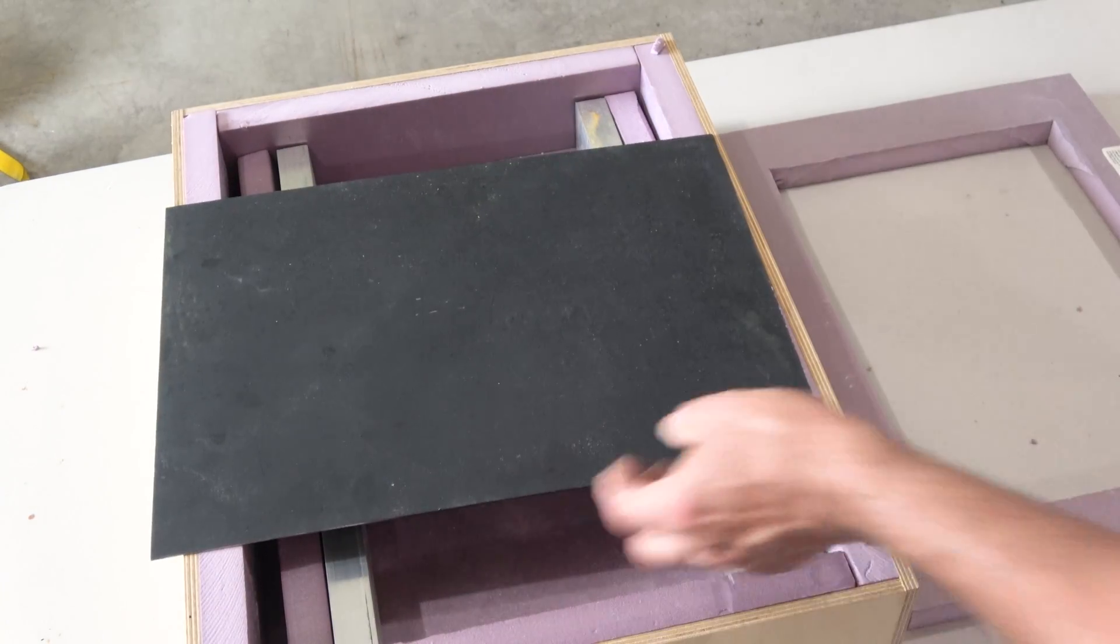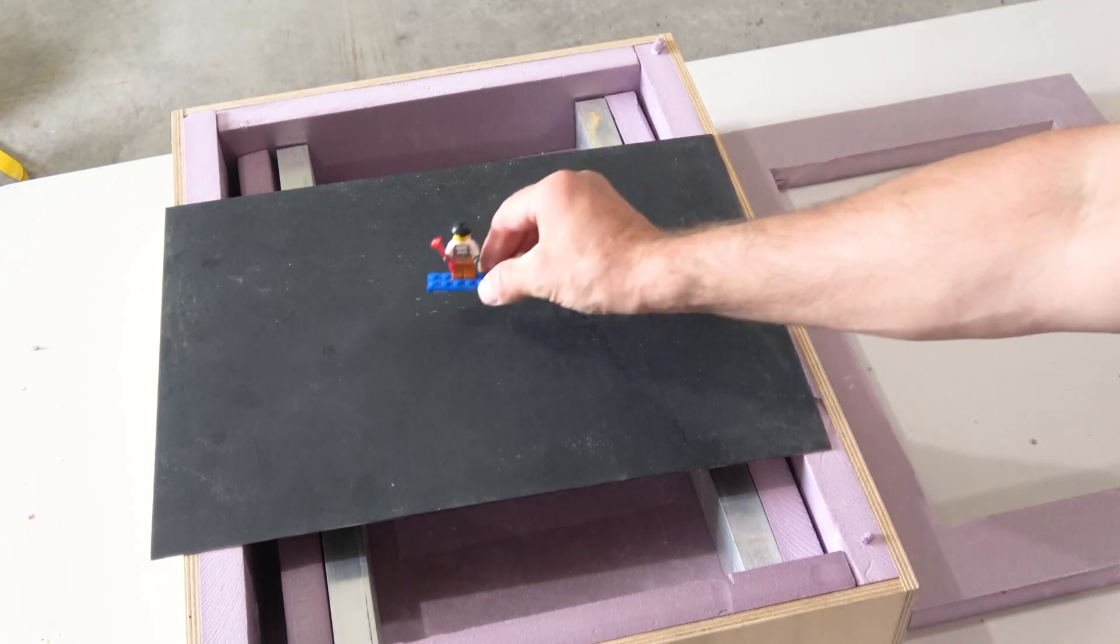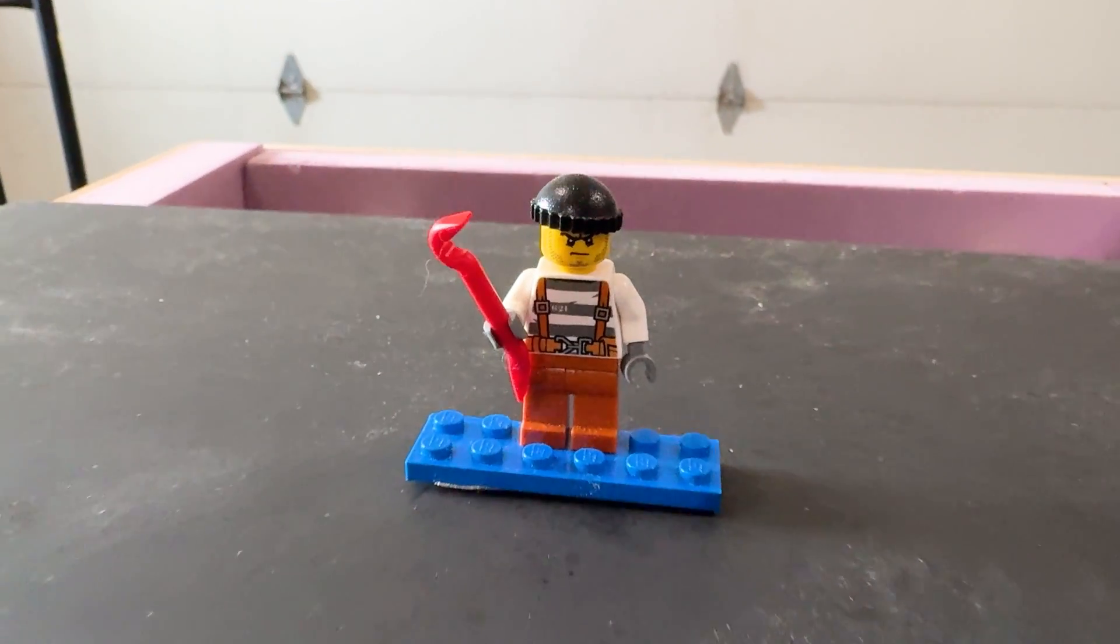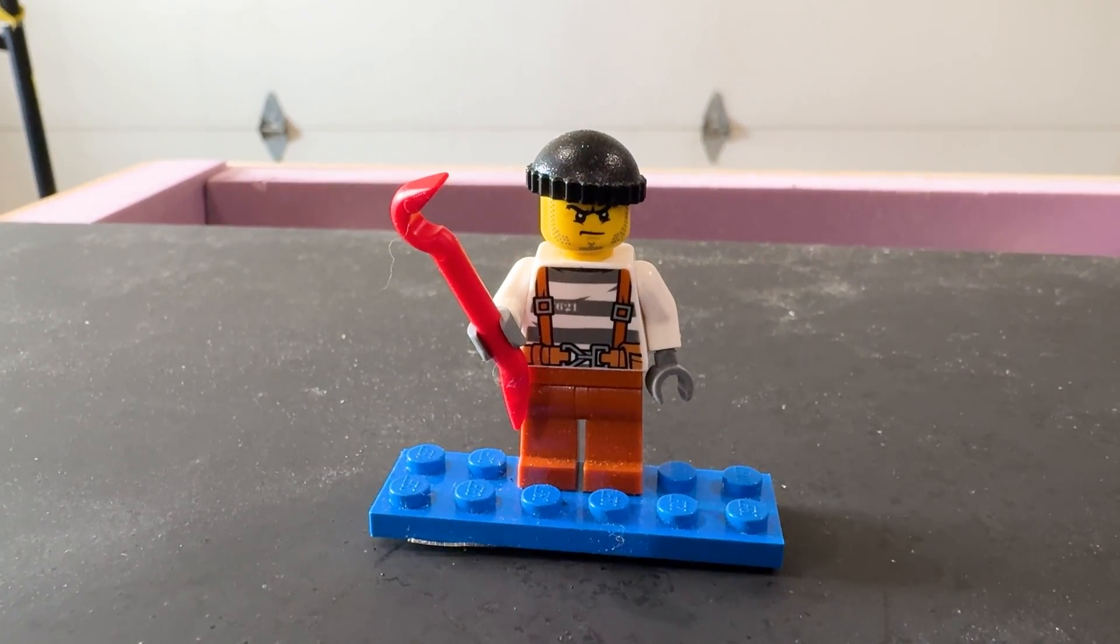And just for fun, we hot-glued a Lego minifigure in the center of the plate. He was a sneaky-looking crook with a tiny red crowbar. What could go wrong?